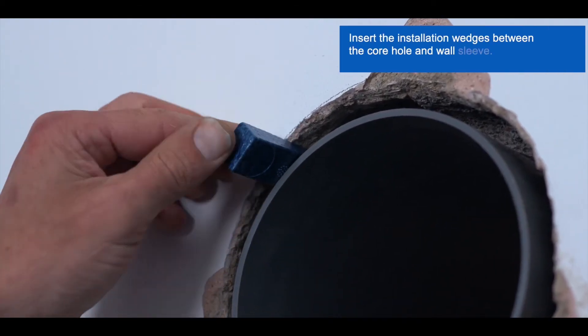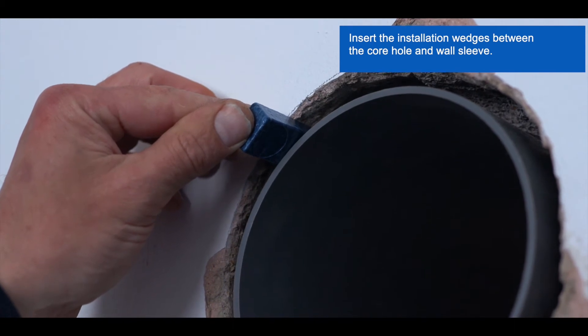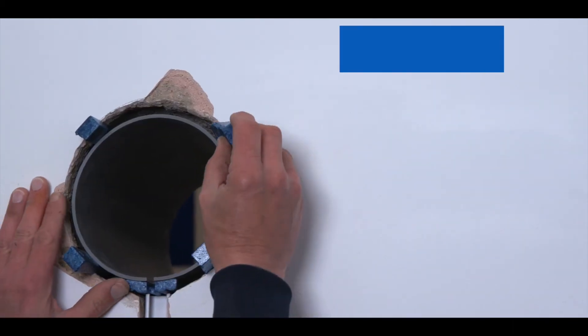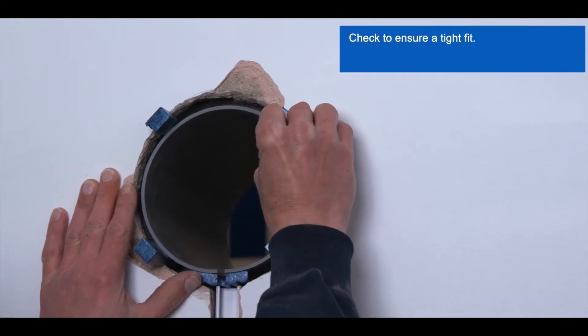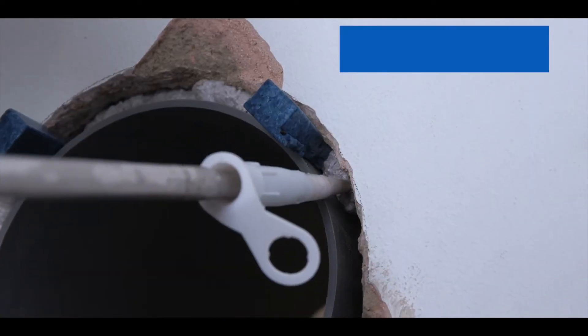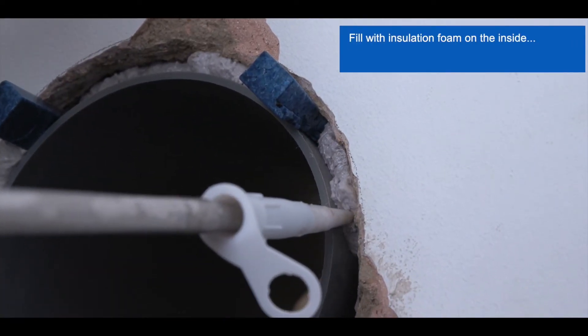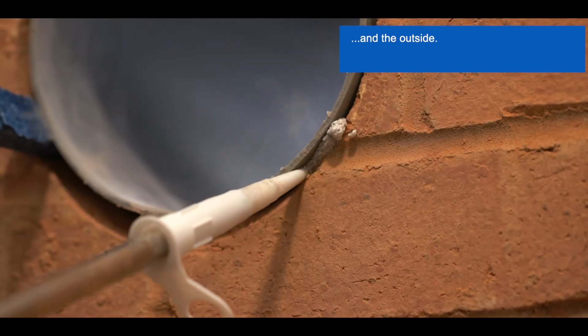Once the wall sleeve is inserted, break up the four installation wedges supplied and insert between the core hole and wall sleeve. Once the wedges have been inserted, check to ensure a tight fit. Fill the gap between the core hole and the wall sleeve with insulation foam on both the inner and outer walls.